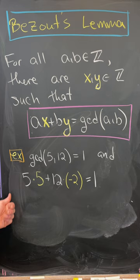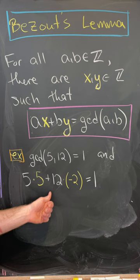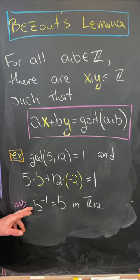For example, the GCD of 5 and 12 is 1, and we have 5 times 5 plus 12 times minus 2 is equal to 1. And for a little group theory application, that means that 5 inverse is equal to 5 inside of Z12.